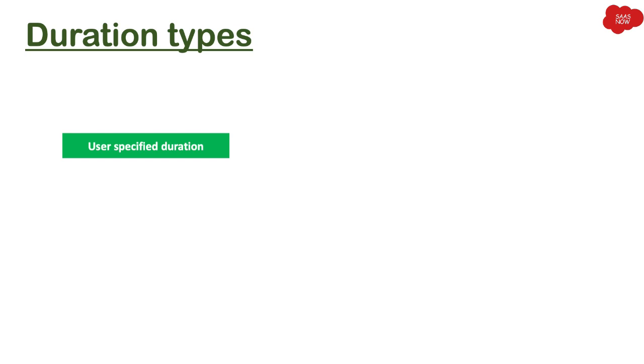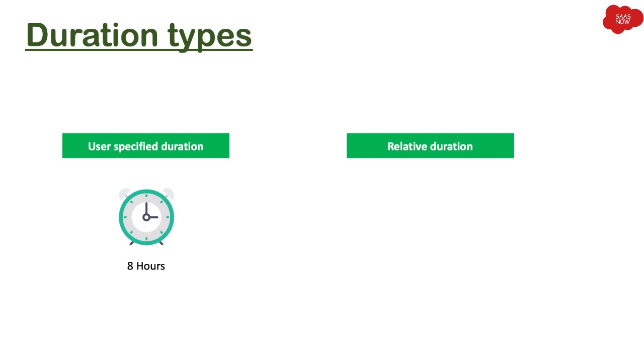Duration types: while creating the SLA definitions for your SLA, you can mention different types of duration. You have two types: one is user-specified duration and another one is relative duration. In user-specified duration you can mention a particular length of time — for example, eight hours. In relative duration you can mention something like next business day.